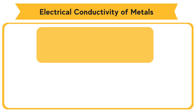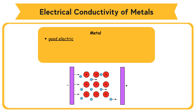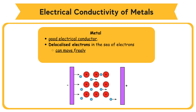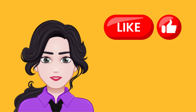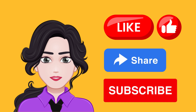Electrical conductivity of metals. Metal is a good electrical conductor. Delocalized electrons in the sea of electrons can move freely throughout the metal. Electrons in the sea of electrons are free to flow and carry electrical charges when there is a potential difference.